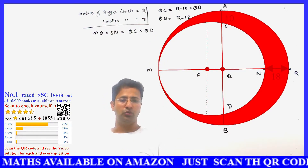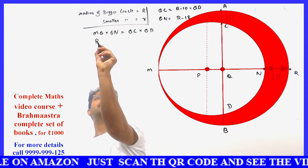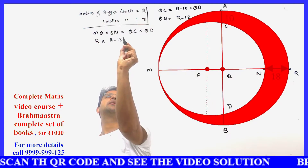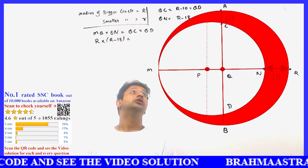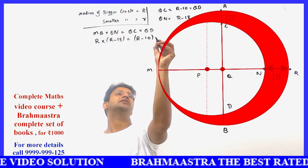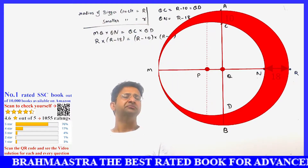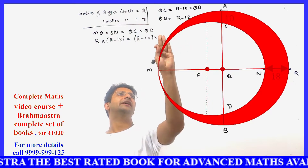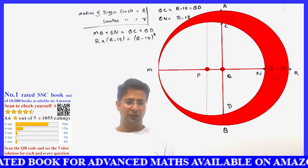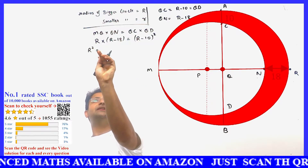MQ is capital R, and QN is R minus 18. QC and QD are both R minus 10. So the equation becomes: R × (R minus 18) = (R minus 10) × (R minus 10), which gives R squared minus 18R = (R minus 10) squared.